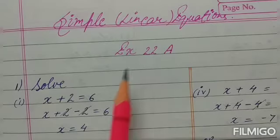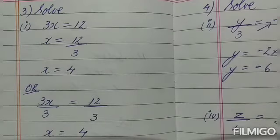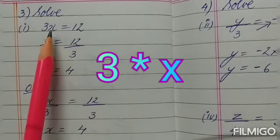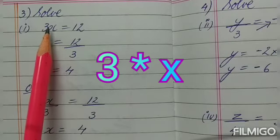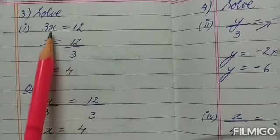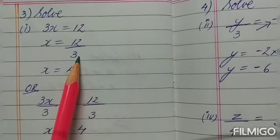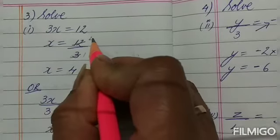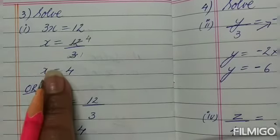Let's get started with question number 3 of simple linear equations, Exercise 22A. Starting with the first one: 3x equals 12. Now, 3x means 3 into x. When multiplication goes from one side of the equals to the other side, it goes as division. So this 3 goes to the other side as division. 3 and 3 cancel, and 12 divided by 3 gives 4. So x equals 4. This was by the transposition method.